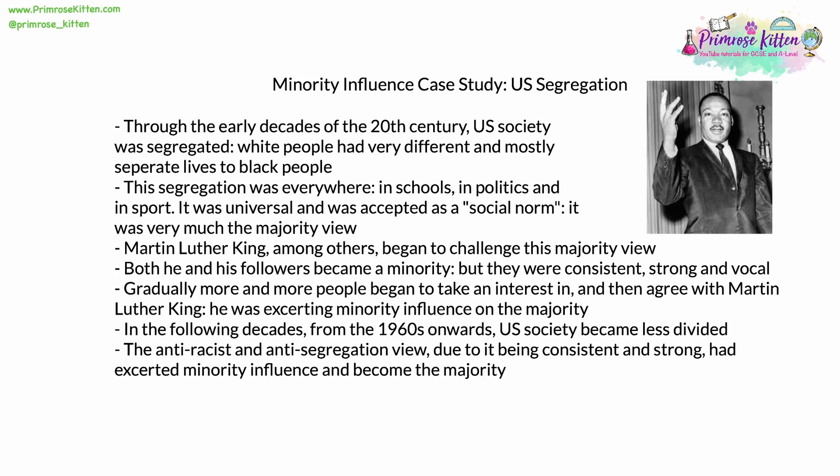A useful case study for minority influence is that of US society and its continued segregation. Through the early decades of the 20th century, society in the United States was segregated — white people had very different and almost completely separate lives to black people. This segregation was everywhere: in sport, in schools, in politics. It was completely universal, accepted as a social norm, and very firmly the majority view. Martin Luther King was different. He and others around him began to challenge this majority view and social norm, becoming a minority — but they were consistent, strong, and vocal.